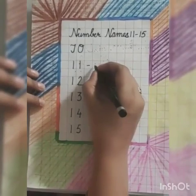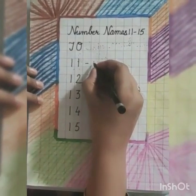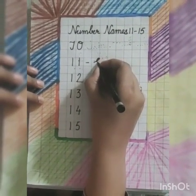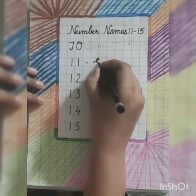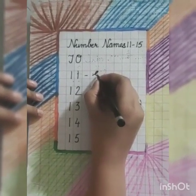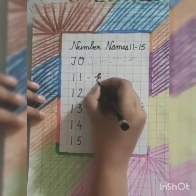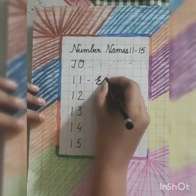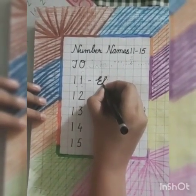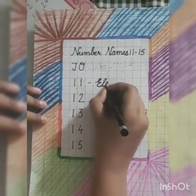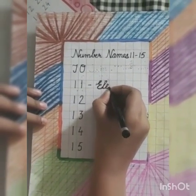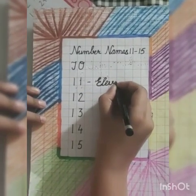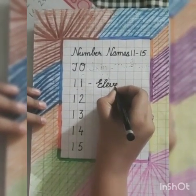Start from here. Go up. Make a loop. Now turn like this. Again, make a curve. This is capital cursive letter E. Now join L. E-L-E-V-E-N. 11.